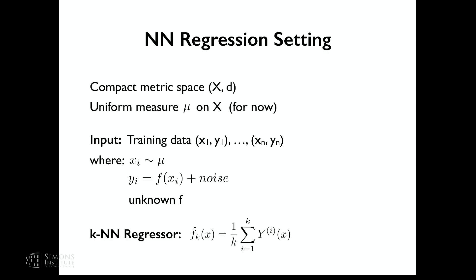We will use the k-nearest neighbor regressor, which I'll call f-hat-k of x. This is simply (1/k) times the sum from i=1 to k of y^i(x) — you look at the k closest neighbors of x, look at their labels, average them up. That's it, the simplest thing imaginable.